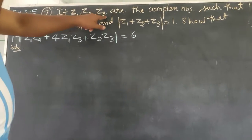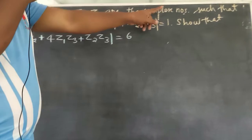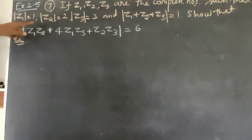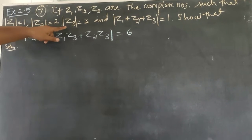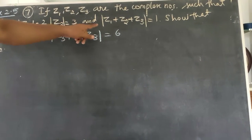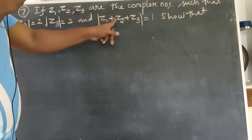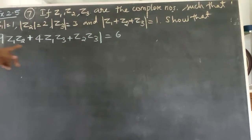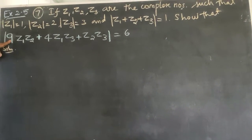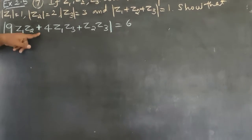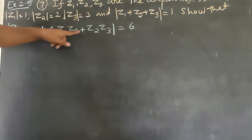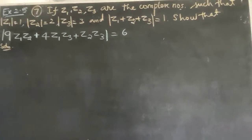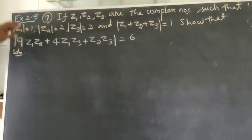If Z1, Z2, Z3 are complex numbers such that modulus of Z1 equals 1, modulus of Z2 equals 2, modulus of Z3 equals 3, and modulus of Z1 plus Z2 plus Z3 equals 1, show that modulus of 9Z1Z2 plus 4Z1Z3 plus Z2Z3 equals 6.